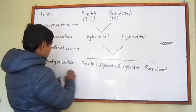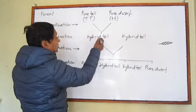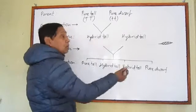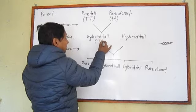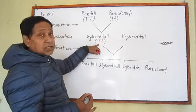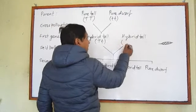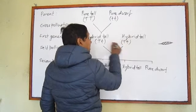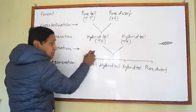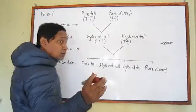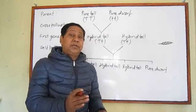In the second generation he found both tall and dwarf plants. This means the tall plant of the first generation was not purely tall — it must have carried genes for both tallness and dwarfness. When self-pollinated, taking two sets of genes, out of four offspring, three were tall and one was dwarf — that is, 75% tall and 25% dwarf.